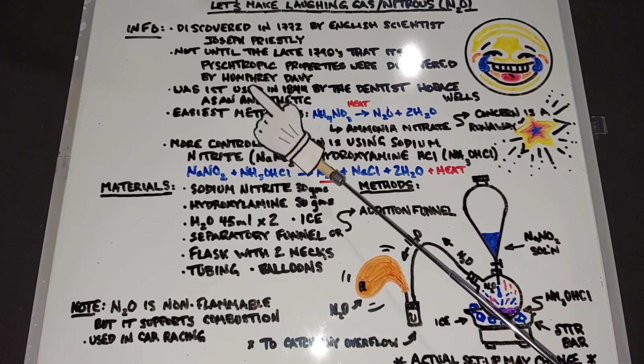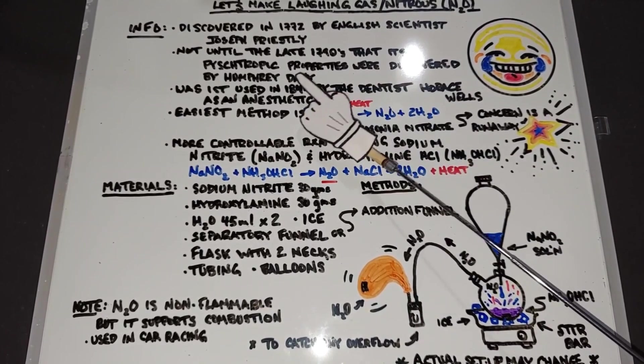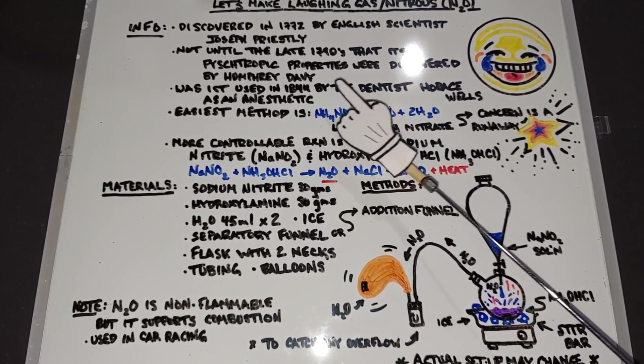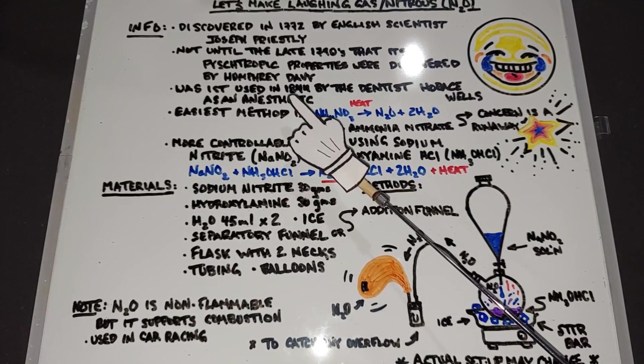By a guy named Humphrey Davy, along with its psychotropic properties, it was found that it could put people into a deep sleep. So it was first used in 1844 by dentist Horace Wells as an anesthetic and it's still used today.